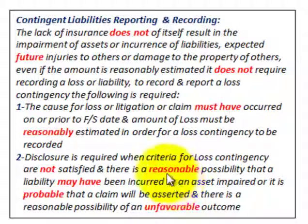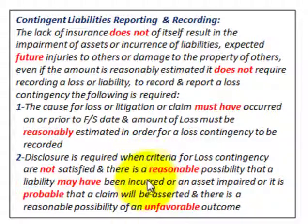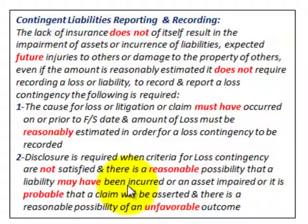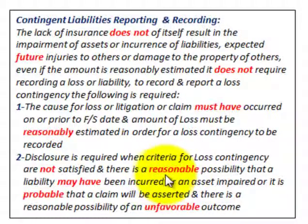These criteria require that something happened in the past — prior to the financial statement date — not something in the future. There must have been a reasonable possibility that a liability was incurred, and something had to have happened prior to the financial statement date in our example. We'd also need to know there would be an unfavorable outcome before doing any reporting of a contingent liability.